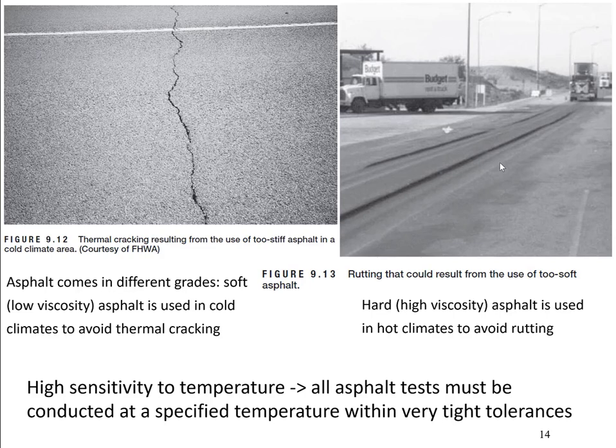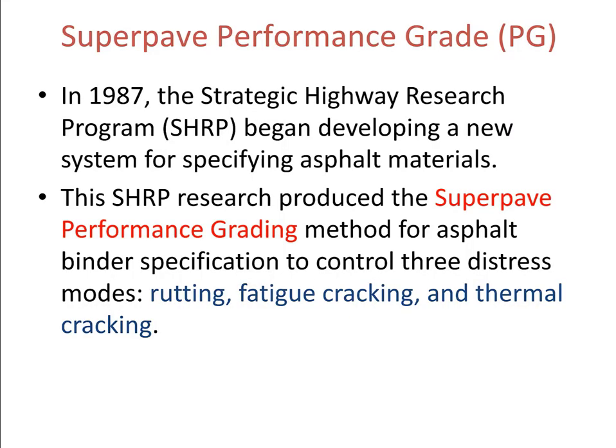When we test asphalt, those tests should be conducted at a specified temperature within very tight tolerances. In 1987, the Strategic Highway Research Program, SHRP, began developing a new system for specifying asphalt materials. This SHRP research produced the Superpave performance grading system for asphalt binder specification to control three different distress modes: rutting, fatigue cracking, and thermal cracking.